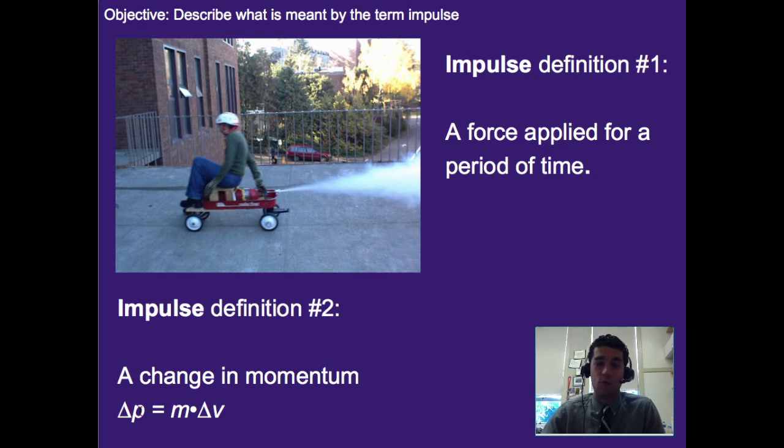So oftentimes we'll just write an impulse as delta p. That would be kind of the one more official way to write it, but usually you end up having to do a calculation with mass times change in velocity or force times time.